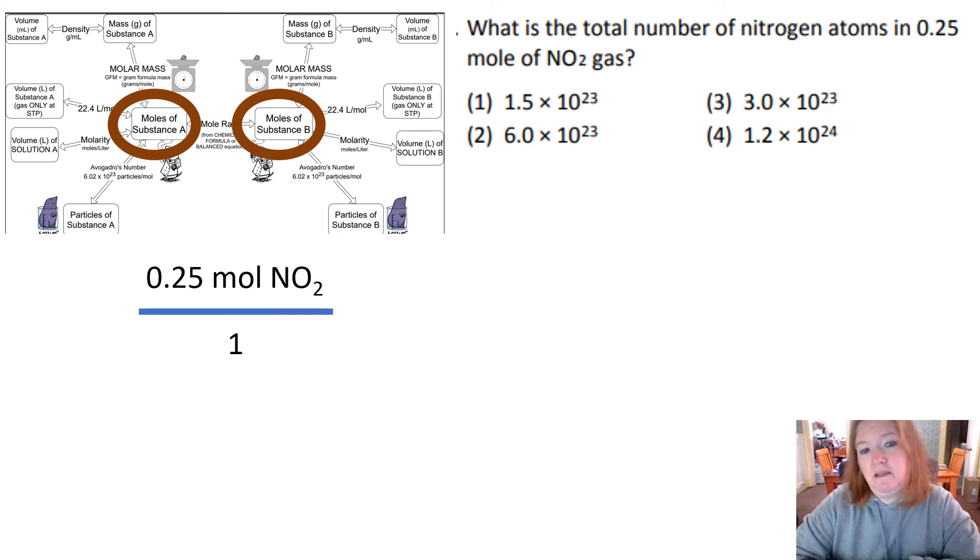So what I need to do is I need to convert nitrogen dioxide to nitrogen atoms. So from the formula for NO2, I can see that in every mole of NO2 there's one mole of N. Subscript is just one, so that allows me to cross that out.